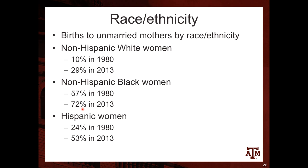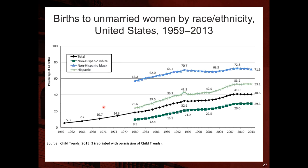An important note: of the 72% of African American women having babies while unmarried, some of them may be cohabiting — meaning a father is helping raise the child alongside the mother in the household. Looking at this data graphically, the percentage of births to unmarried women has increased over time across all groups, with African American women having the highest rates, non-Hispanic white women the lowest, and Hispanic women in between.